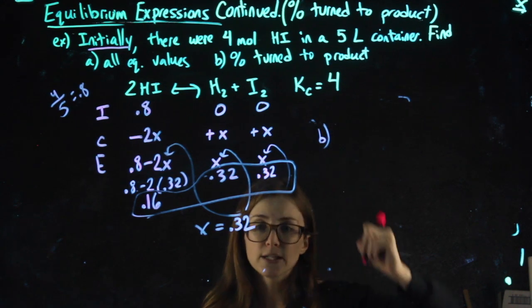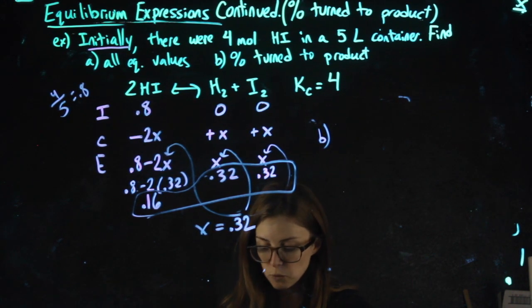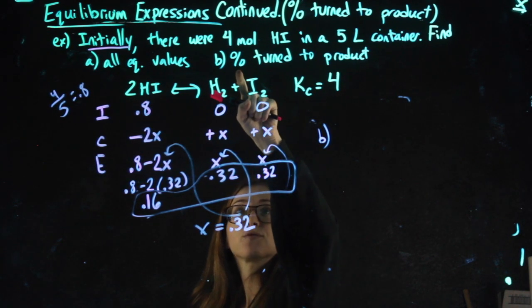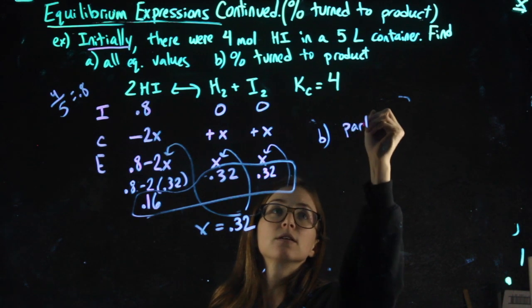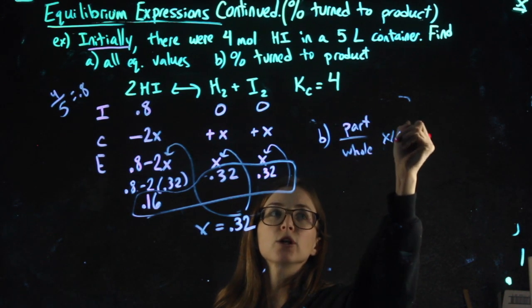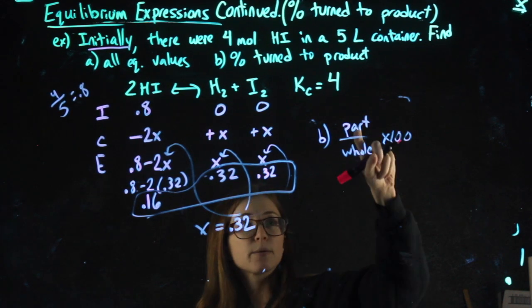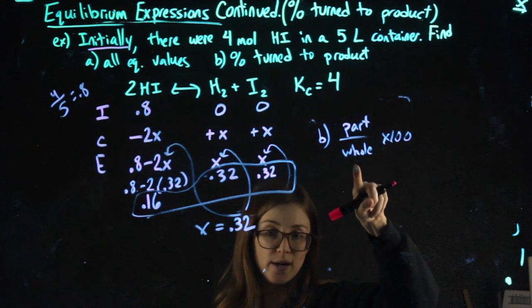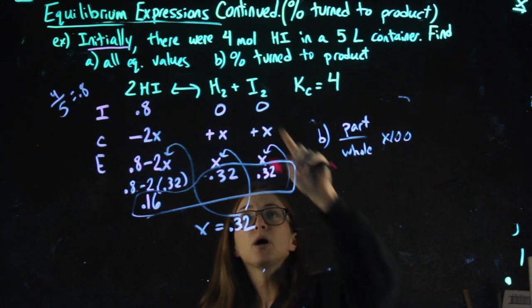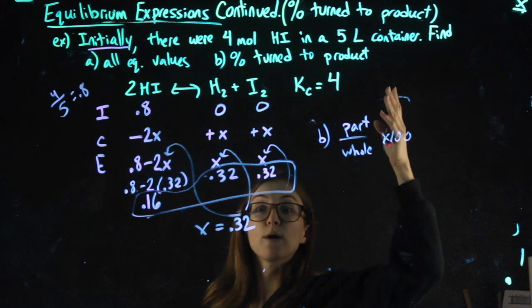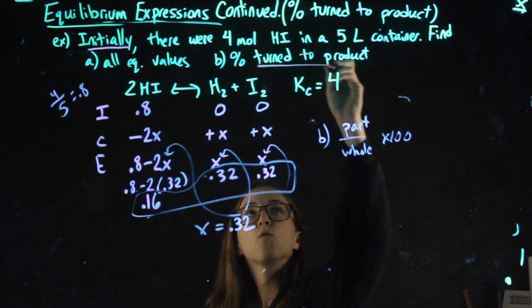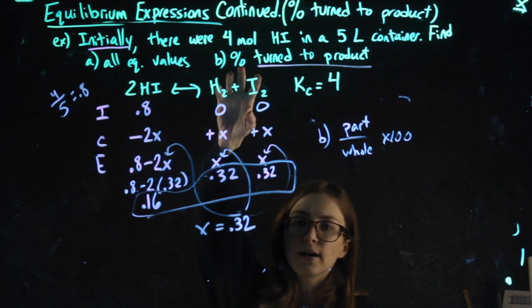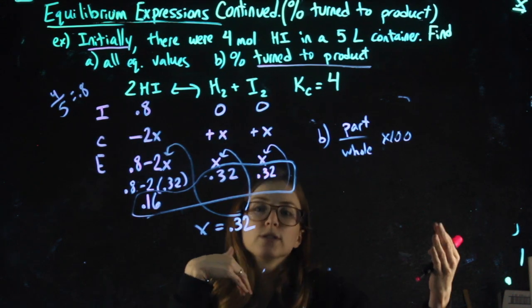Part B: percent turned to product is not a formula I give you because I want you to understand what the words mean. In general, anytime I ask for a percent, we're talking some part over some whole times 100. Right? The percent you got on the test is the percent you got right—the part you got right over all of the total points times 100. Here I'm not looking for a percent correct on a test; I'm looking for the percent of what turned to product.